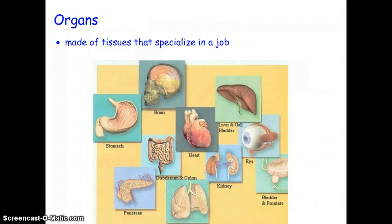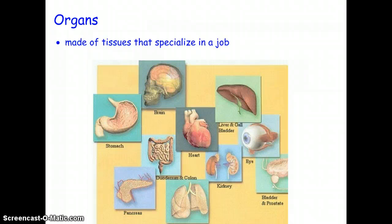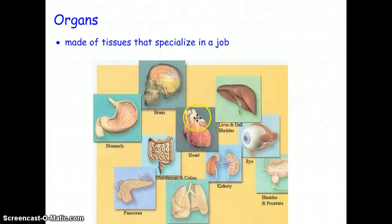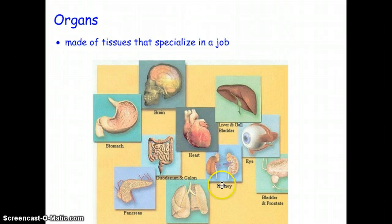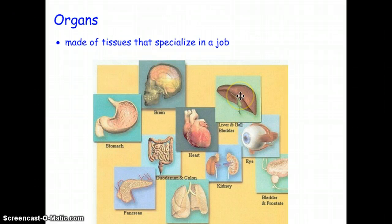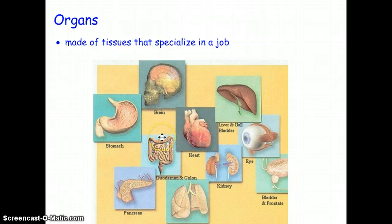If you put certain tissues together, you can make up a whole organ. For example, if you take all of that muscle tissue and put it together into something called a heart, that heart has a certain function. When you take certain tissues that specialize in a certain job and put them together, they turn into an organ — like a stomach, lungs, kidneys, a bladder, an eye, liver, and pancreas. Neural tissue put together makes a brain.